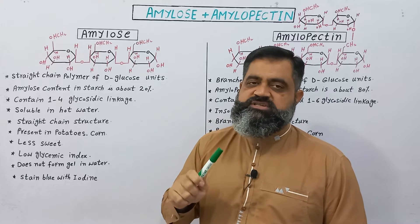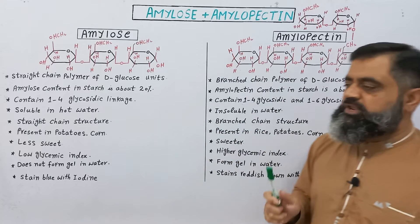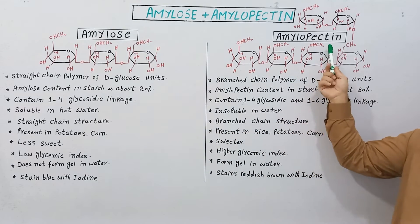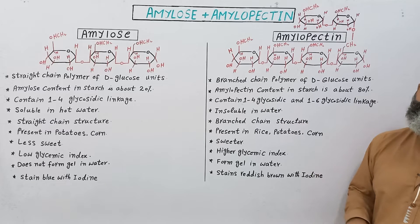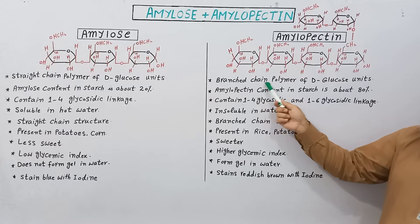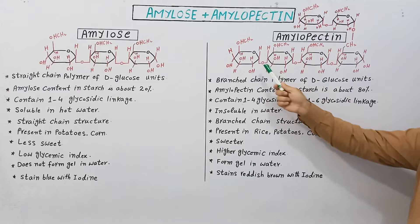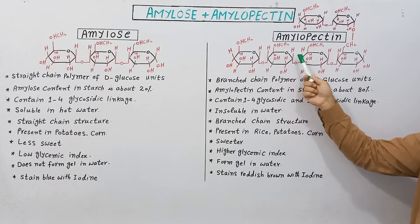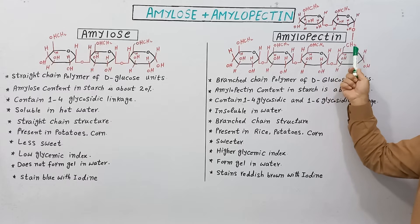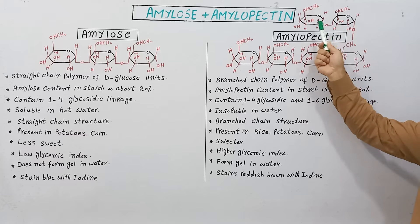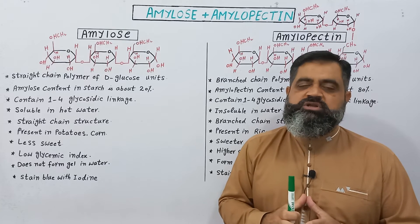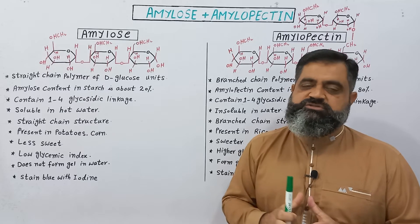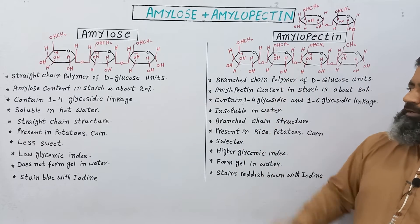Amylose starches have a straight chain structure. On the other hand, amylopectin starches are branched — they are also a polymer of D-glucose, but a branched chain polymer. As you can see, this is a straight chain molecule, but at the number six position you can see a branch. There can be one or more than one branches on these types of starches, so such starches are known as amylopectin.